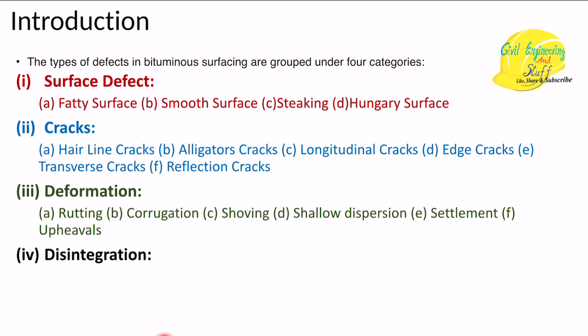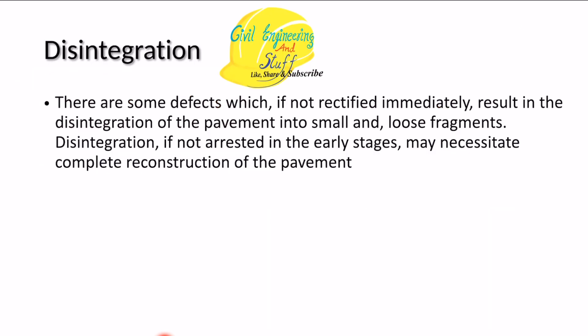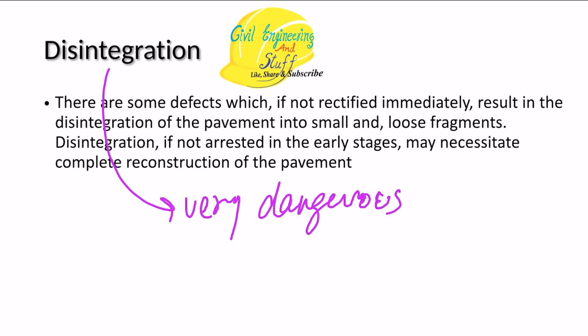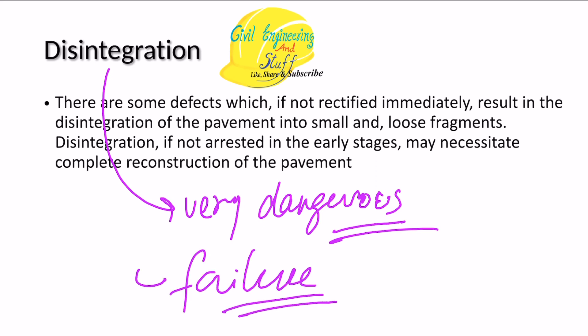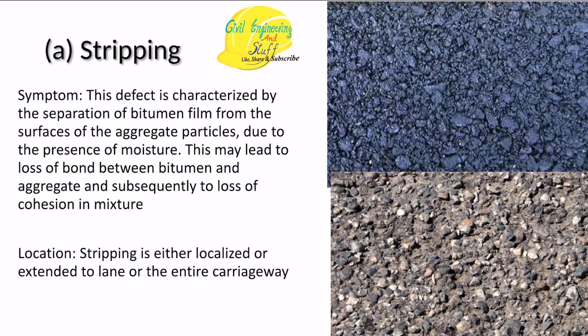Disintegration is the kind of defect in flexible pavement that, if not rectified, will result in the total failure of the pavement. In terms of severity level, these are very dangerous kinds of defects. If they are not checked right at the start of such a defect, it will eventually lead to pavement failure. Let's start with the first kind of disintegration defect.